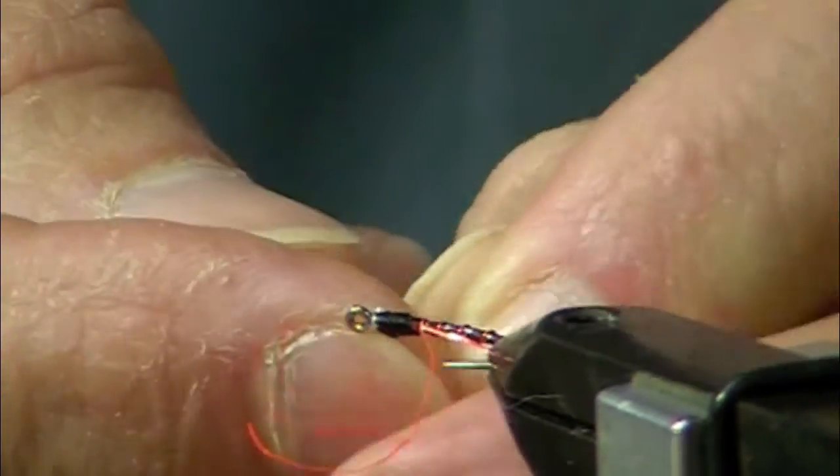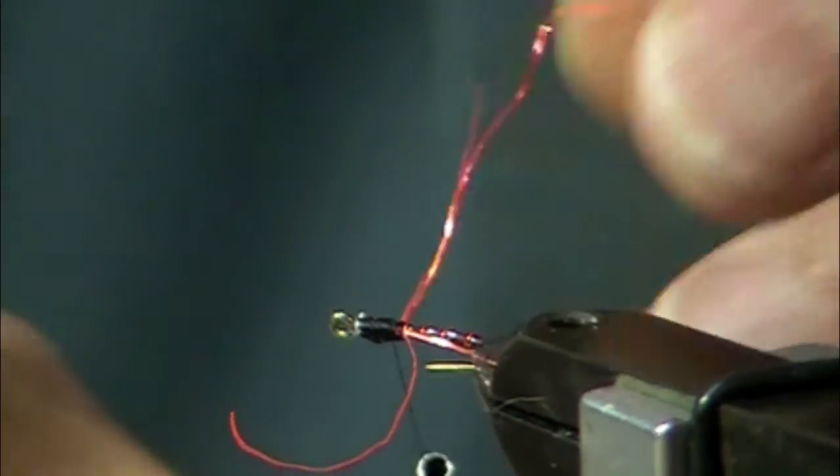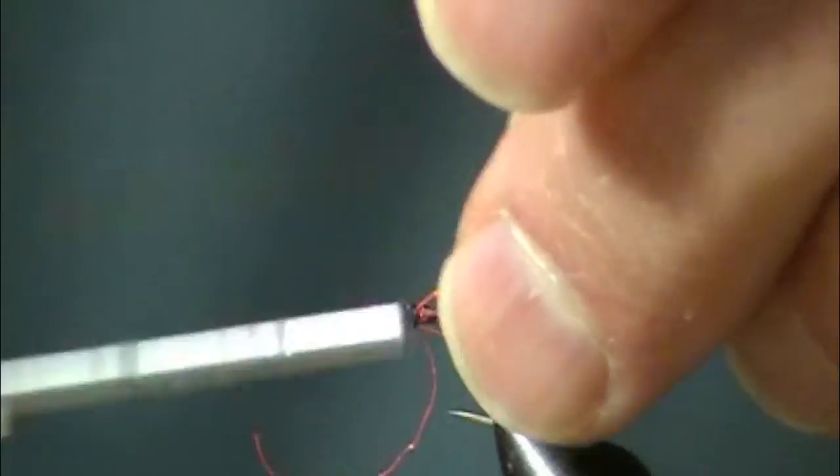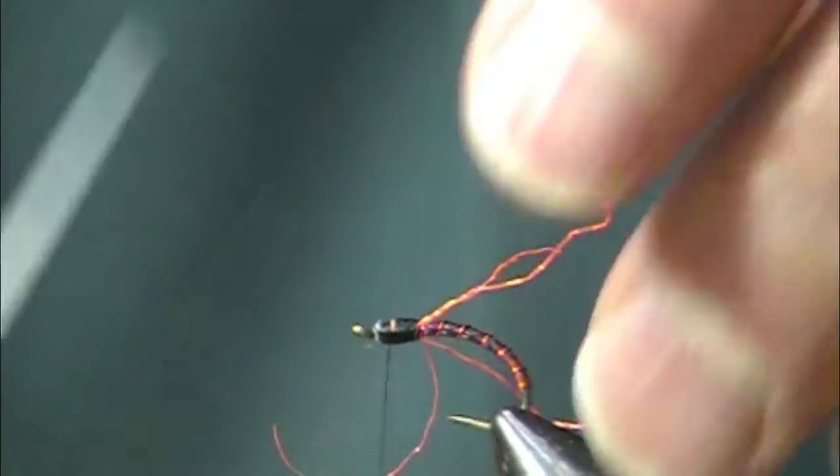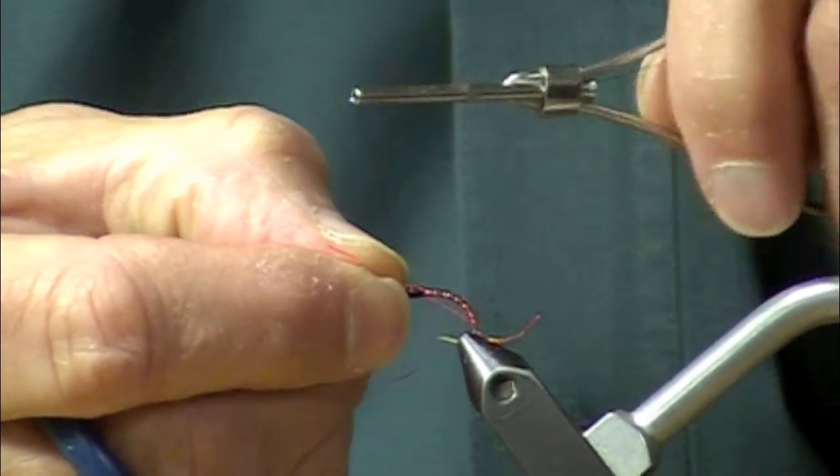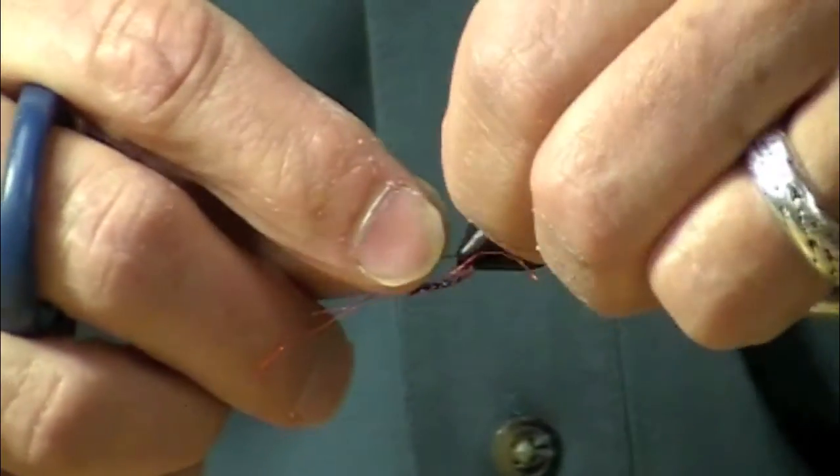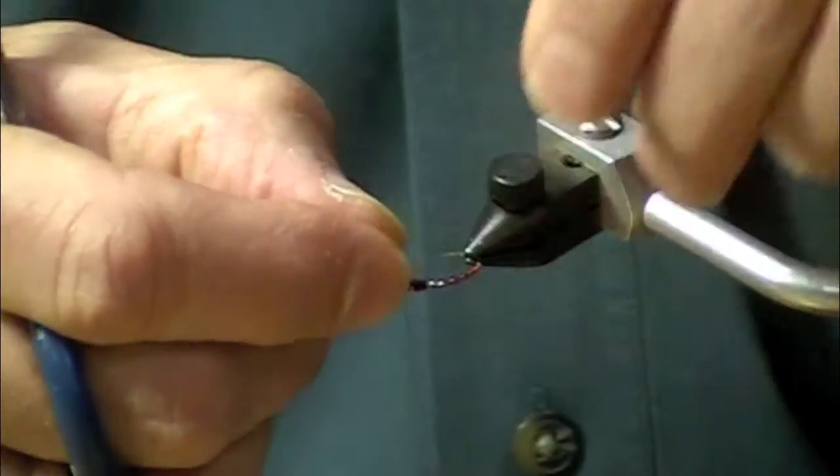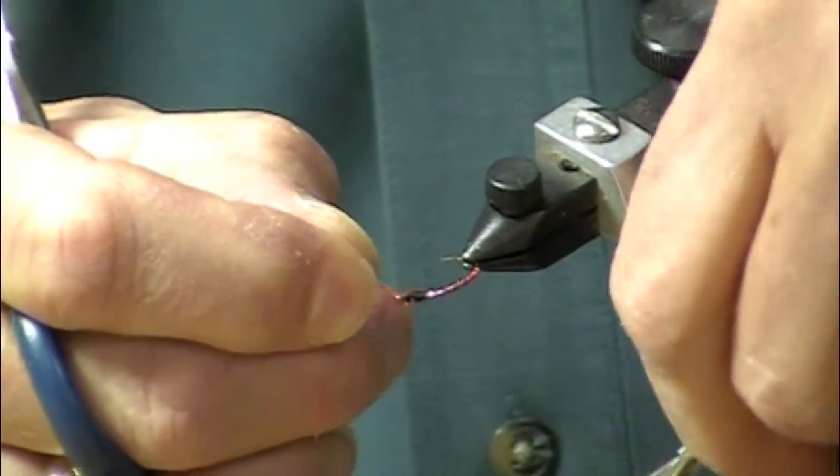It doesn't want to cooperate here. Advance the thread. Take this over. Get my fingers out of the way and tie that down. And on the other side I'm doing the same thing. I don't worry if they're perfectly across from each other.